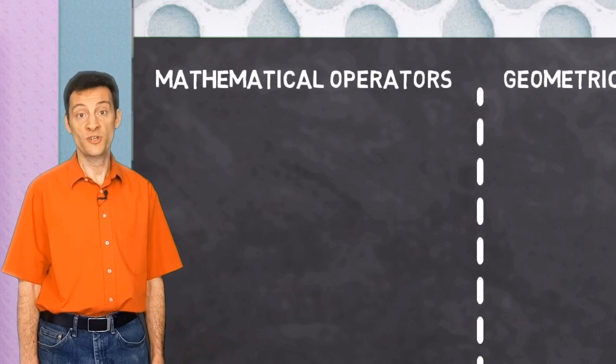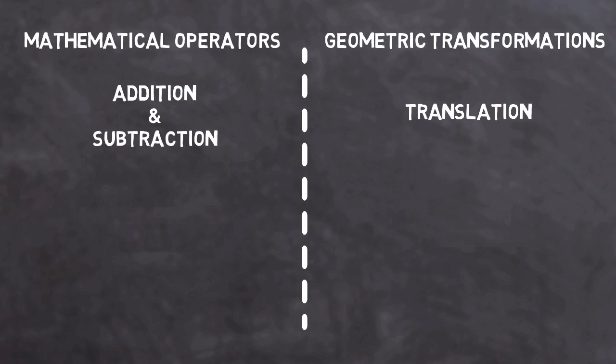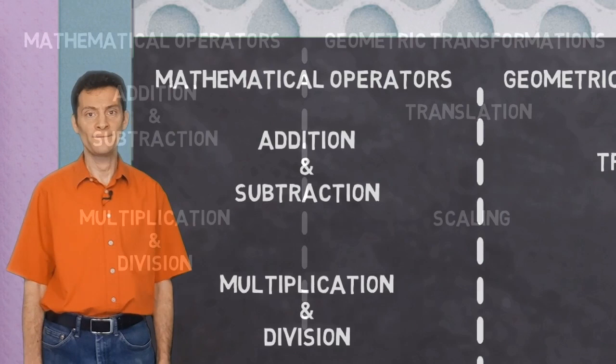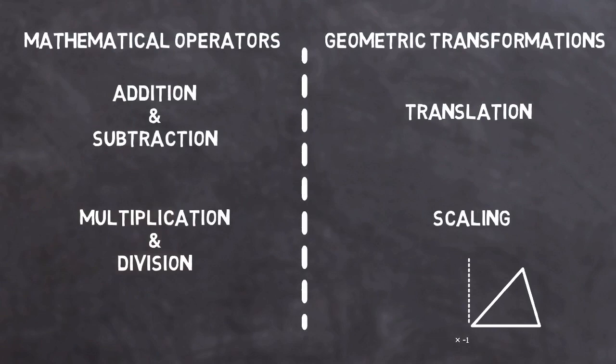Addition and subtraction can be used to translate an object. Addition moves the object to the right, and subtraction moves it back to the left again. Multiplication and division can be used to scale an object, making it larger or smaller. But multiplication and division are quite powerful operators in the world of geometry, as they can perform more transformations than just scaling. For example, if we scale an object by multiplying it by minus one, we can reflect that object.